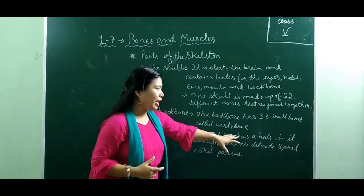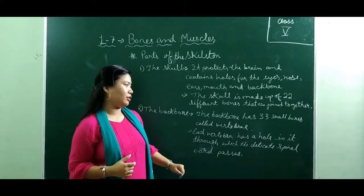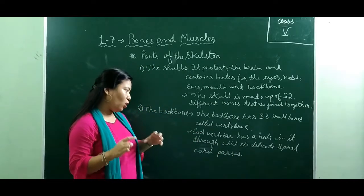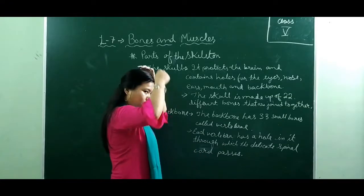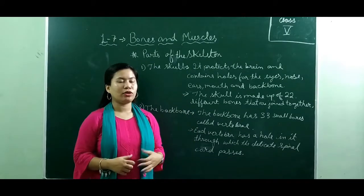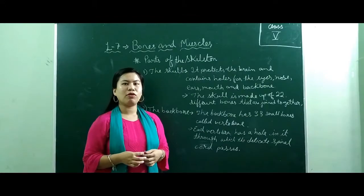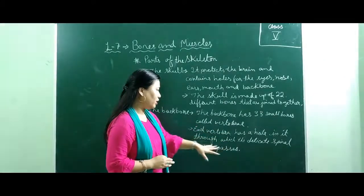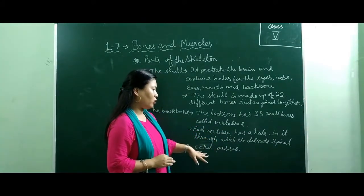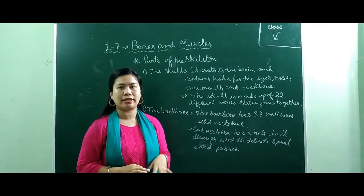Each vertebra has a hole in it through which the delicate spinal cord passes. The spinal cord is the connection from your brain to all parts of your body, so the spinal cord is protected by the backbone. The backbone is also called the spine or vertebral column, and it thus protects the spinal cord.